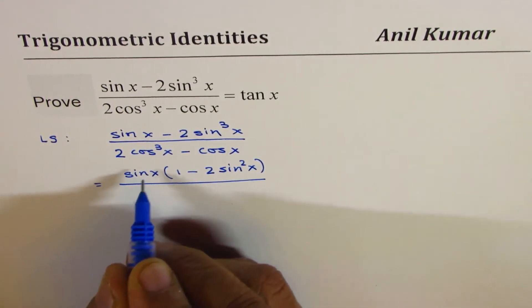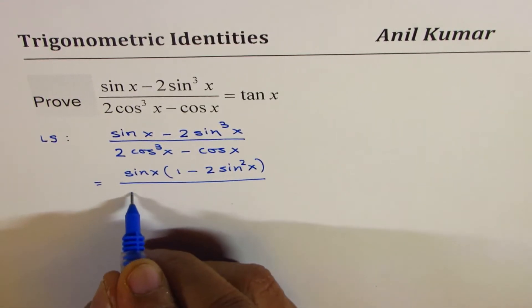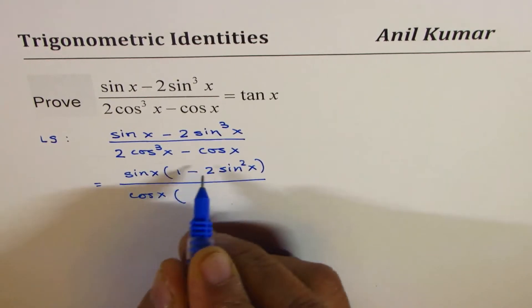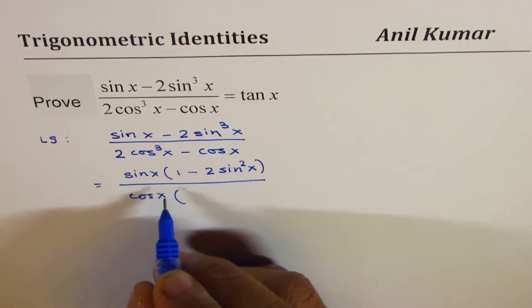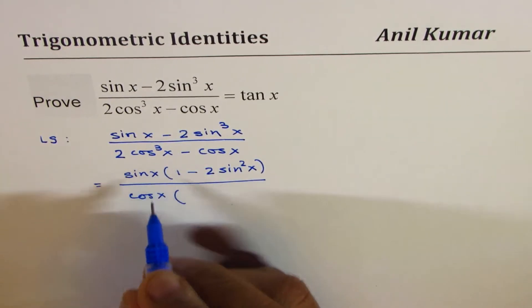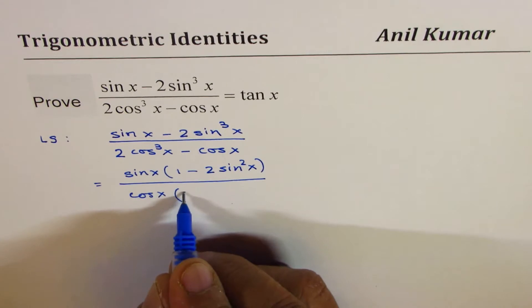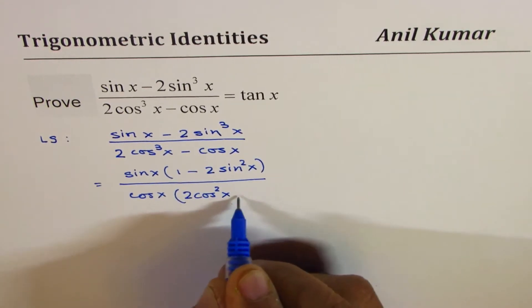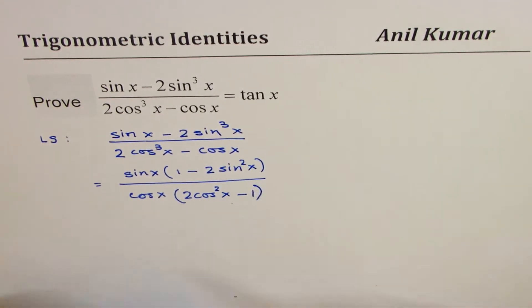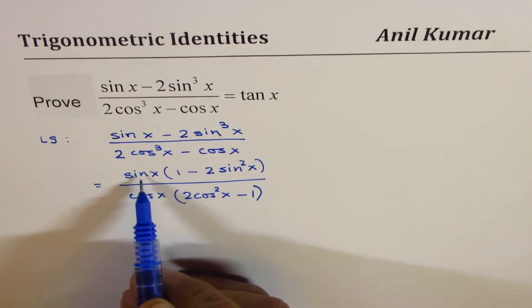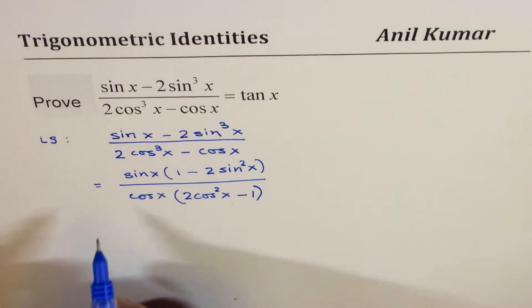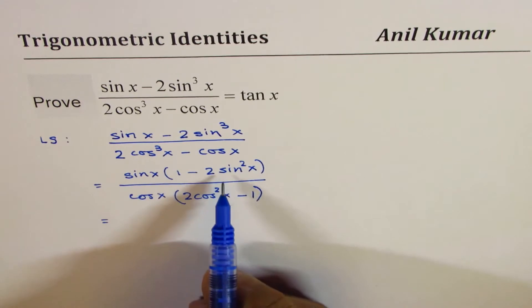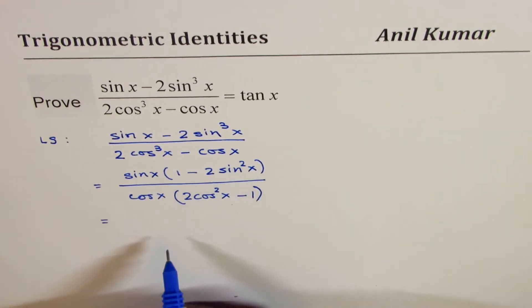From the denominator, we can factor cos x. So that gives you tan x. As you solve, you kind of see the solution. You get 2 cos square x minus 1. So sine x over cos x is tan x.